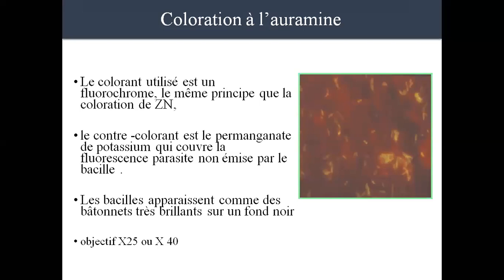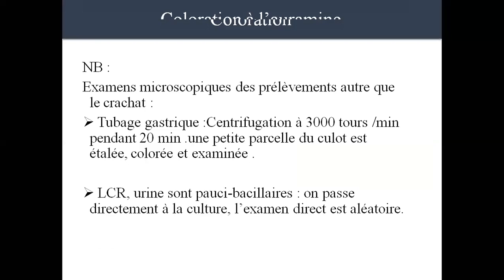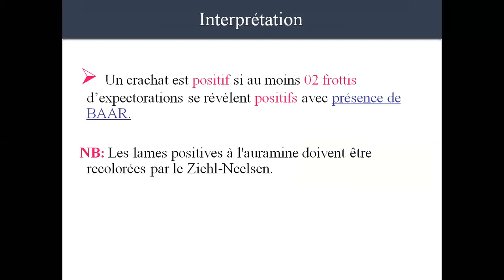Il existe une autre coloration : la coloration à l'auramine, avec un microscope à fluorescence. La différence c'est que l'objectif utilisé est ×25, au lieu de ×100 pour le Ziehl-Neelsen. On peut utiliser le même type de coloration pour d'autres prélèvements comme le tubage gastrique ou le LCR. Un crachat est positif quand deux frottis sont positifs avec présence de bacilles acides-alcool résistants. Une seule lame positive ne suffit pas — le test de référence reste la culture pour le diagnostic de la tuberculose.